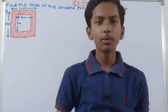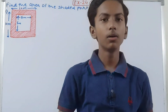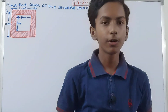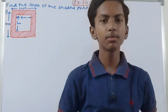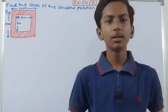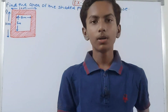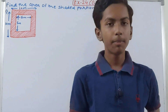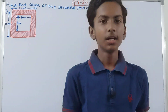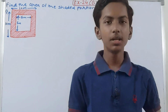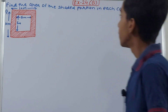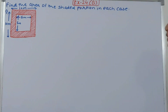Hello friends, welcome back to my YouTube channel Lawk Learning. In this video we are going to solve ICAC Mathematics Class 7, Chapter 24 Area and Perimeter, Exercise 24B, Question Number 1: find the area of the shaded portion in each case.